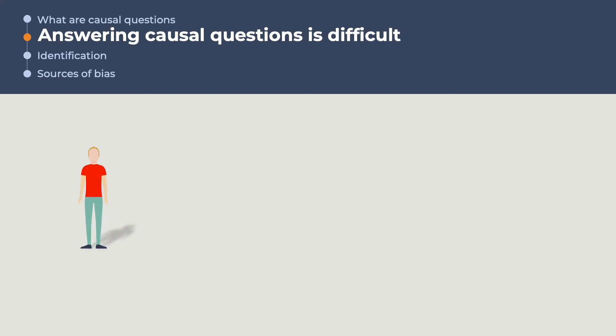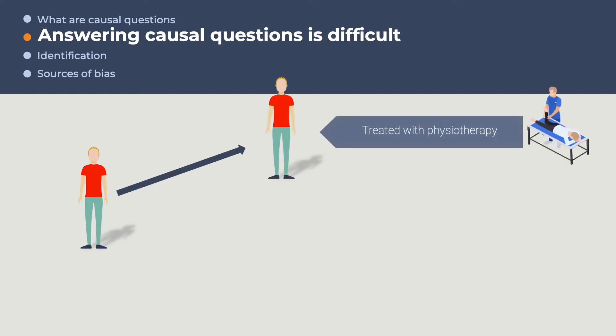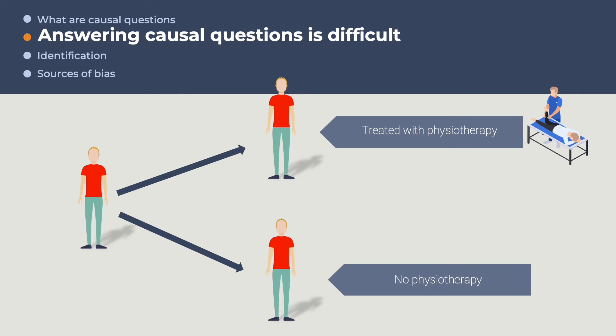Ray is a keen runner, but has recently injured a knee. Suppose you want to know if physiotherapy is effective in helping Ray with his injury. Ray could undergo physiotherapy, or he could skip physiotherapy altogether. To clearly ascertain if physiotherapy helps Ray, one needs to see the evolution of Ray's injury simultaneously, under both states of the world, that is, with physiotherapy, and without it.